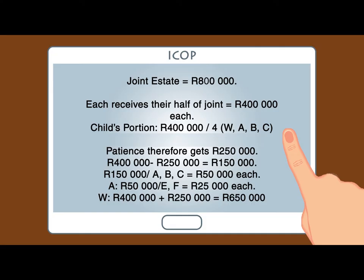Should one of them have predeceased the deceased and left their descendants, then those descendants will receive R25,000 each.